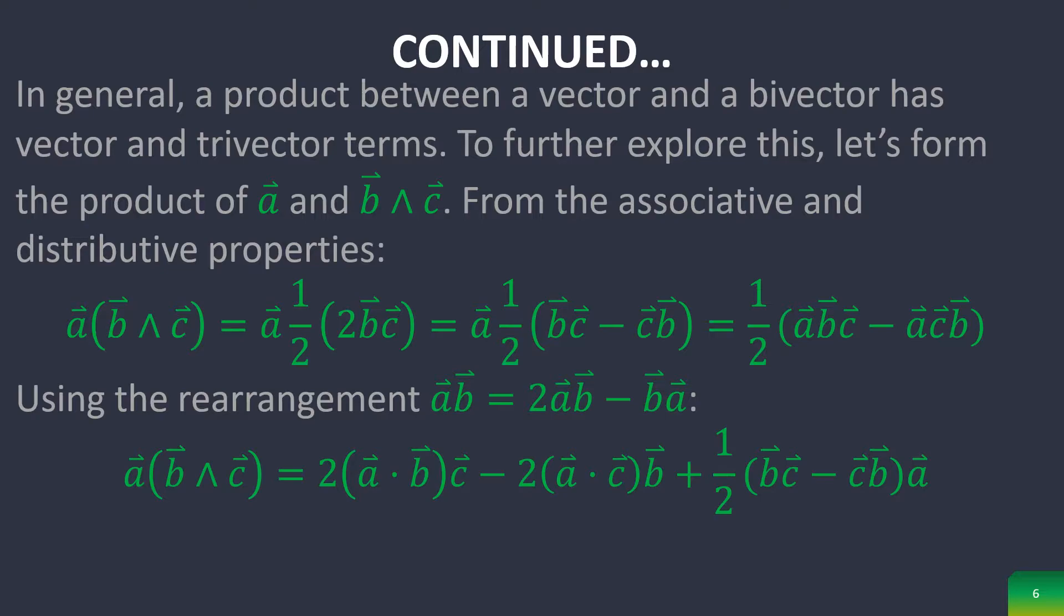To further explore this, let's form the product of A and B wedge C. From the associative and distributive properties, we get the following. And then using some rearrangements, we get the below terms,